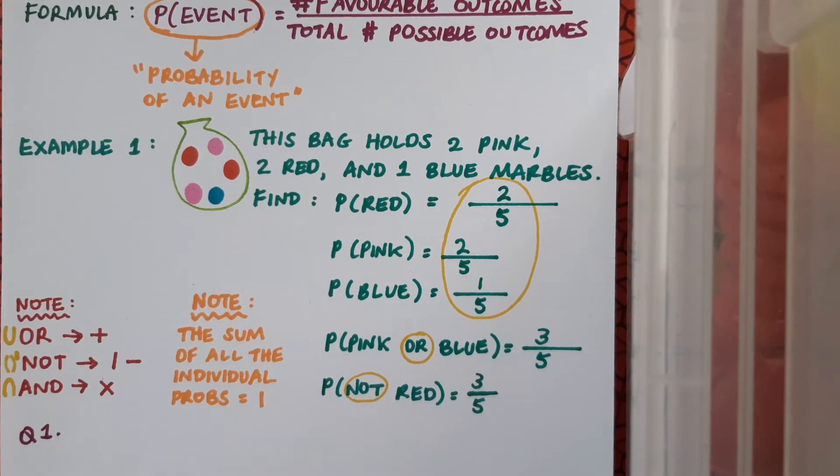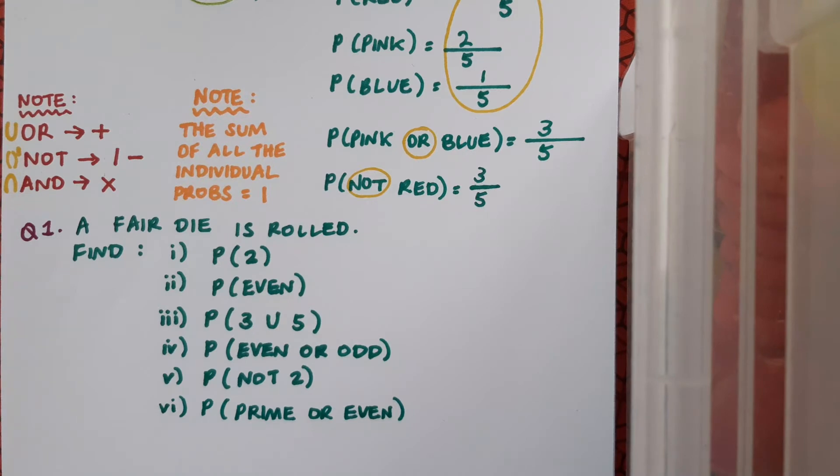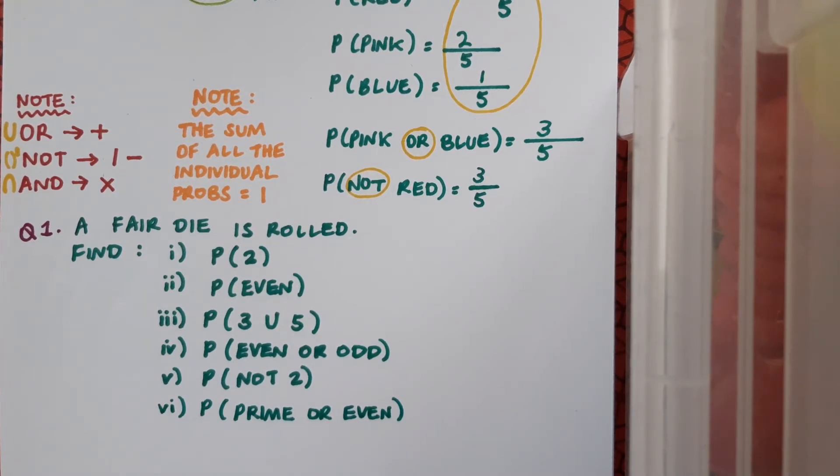So with all of that in mind, here's a question for you to do. Your question is that a fair die is rolled—and by the way, die is just the singular and dice is the plural. We want to find six different probabilities there, so pause the video now yourself, calculate these, and then play and see if you're correct.